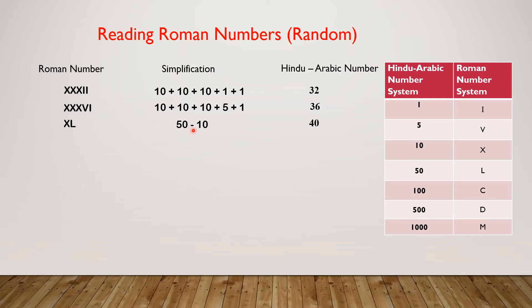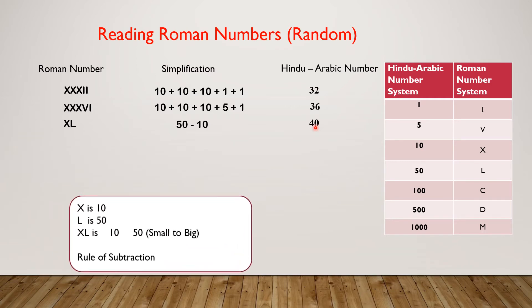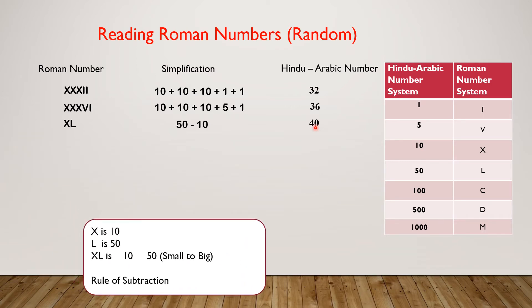XL: simplification 50 minus 10, number 40. X is 10, L is 50. For XL, we put 10 then 50 — so we are going from smaller number to bigger number. That's why we apply the rule of subtraction here.